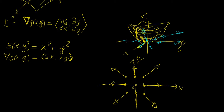These vectors point in the direction where the maximum slope occurs at each point on the surface, and their magnitudes tell you how large that maximum slope is. The gradient is increasing as you move further from the origin, and that is reflected in the growing length of the vectors in the vector field.